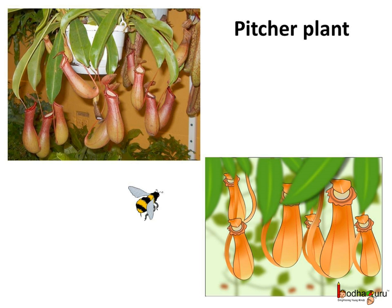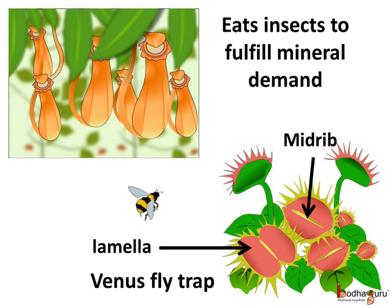The pitcher plant is green, so it can perform photosynthesis. Then why does it catch insects? The pitcher plant generally catches insects to fulfill the need for minerals which are scarce in the soil where it grows. The insects fulfill its need for minerals like nitrogen.